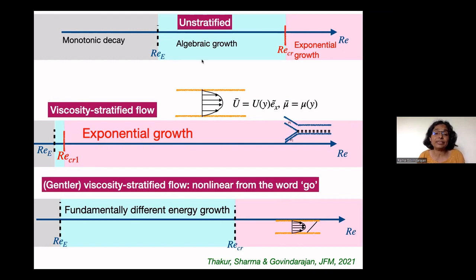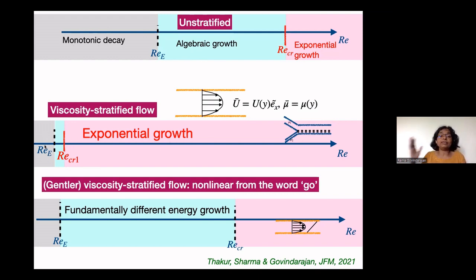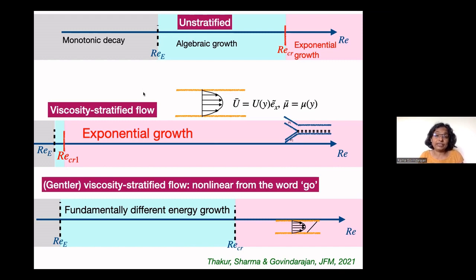The usual unstratified picture: above a certain critical Reynolds number you get exponential growth of instabilities, and there is an energy critical Reynolds number below which any perturbation decays. In between there is a region of algebraic but not exponential growth. In viscosity stratified flow this picture changes dramatically: at very low critical Reynolds number we see exponential growth. The energy critical Reynolds number is even smaller. Exponential growth of instabilities is now dominant, and non-linearities become important very quickly.